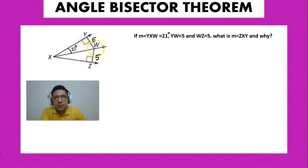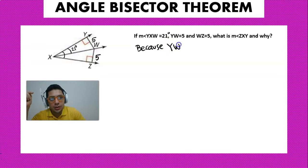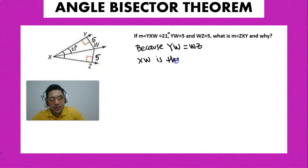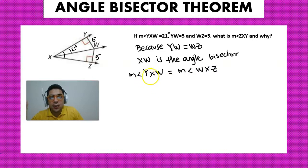The question asks: what is the measurement of angle ZXY? So they're asking for this big angle right here. Because YW equals YZ, that means XW is the angle bisector. And because it is the angle bisector, we know that the measurement of angle YXW equals the measurement of angle WXZ.